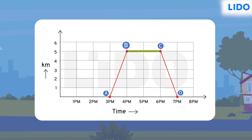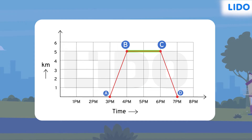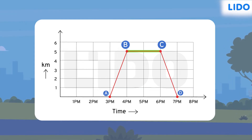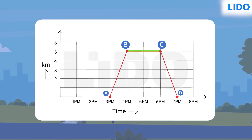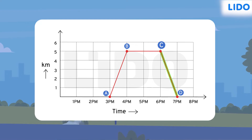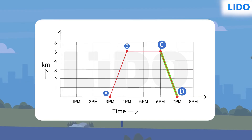Line BC is a straight horizontal line where we see the time is increasing but the distance travelled by Shweta remains constant. This is because she is not in motion. Line CD is again a straight line representing her coming back home at a constant speed.